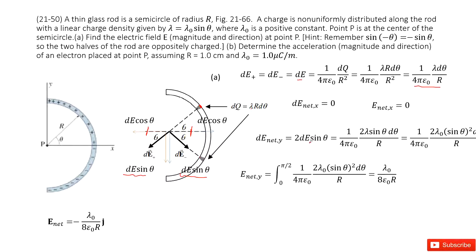The net electric field magnitude for this small fraction at the y-component is 2 dE sinθ. Substituting dE inside gives us this equation. We integrate the y-component from θ = 0 to θ = π/2, and performing the integral gives us the net E field magnitude. The x-component of the net electric field is zero, as those terms cancelled. Therefore, the net electric field in vector form has this magnitude and points in the negative y-direction.